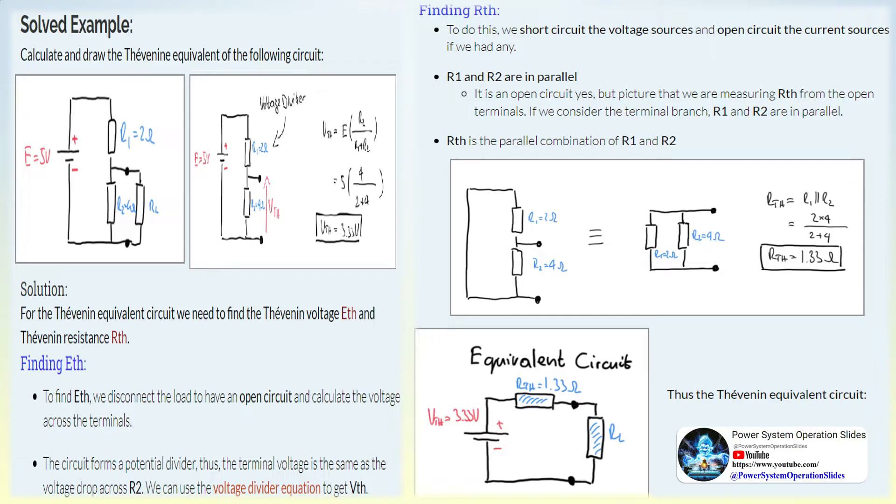Kirchhoff then showed that without changing the flow at any point in B, one can substitute for a conductor in which an electromotive force is located which is equal to the sum of the voltage differences in A, and which has a resistance equal to the summed resistances of the elements of A.